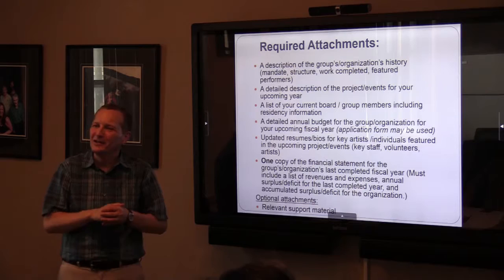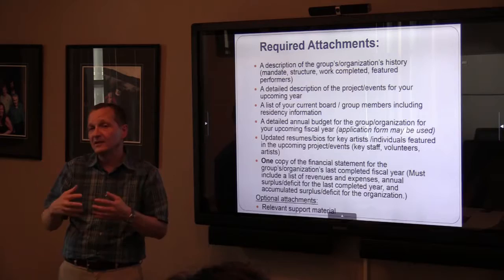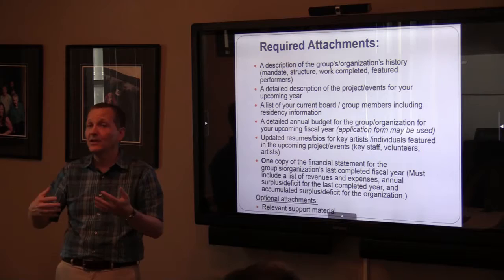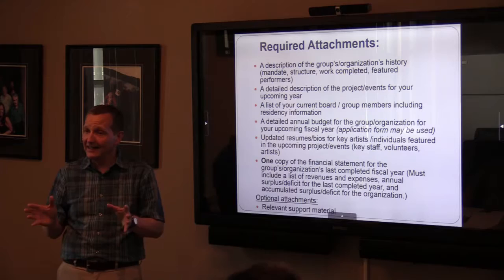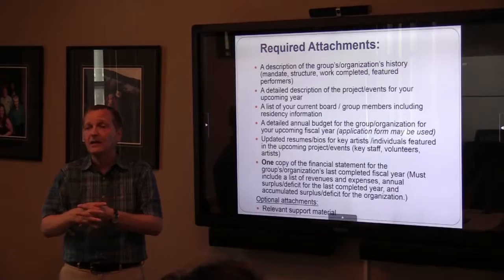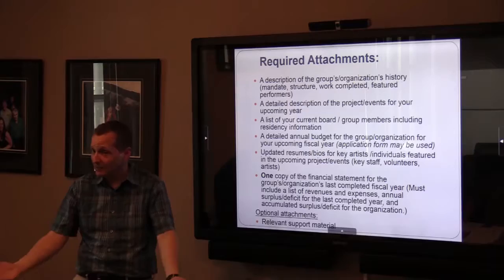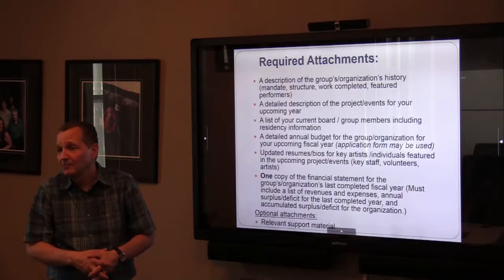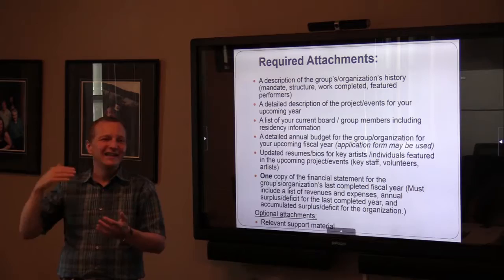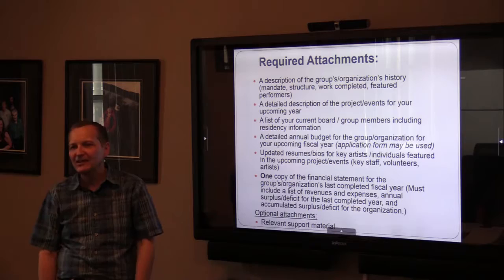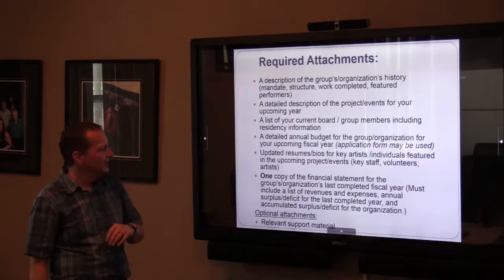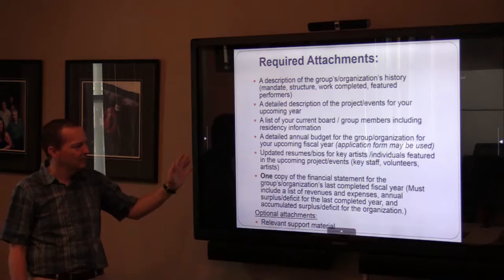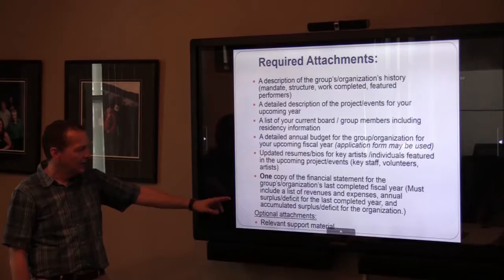If something is only happening the following November, you may not have all the details. Just go ahead and offer the most information you can — assessors understand that. We've had that situation in all our programs, where the deadline means something is over a year away before the applicant will know the full details. One copy of the financial statement is required, showing revenues, expenses, surplus or deficit for the last year, and accumulated surplus or deficit. Additional support materials can also be included if desired.